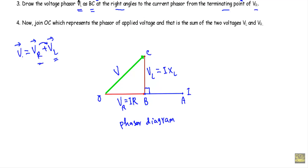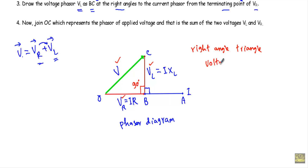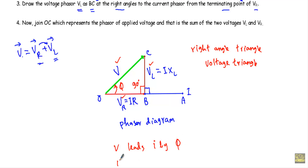Since the angle between Vr and Vl is 90 degrees, the phasor diagram forms a right-angle triangle. This triangle is constructed using the voltage components of the circuit, and is therefore called the voltage triangle. Looking at the phasors, the voltage phasor V leads the current phasor I by an angle of phi (φ). So we can say V leads I by φ, or equivalently, current I lags V by φ.